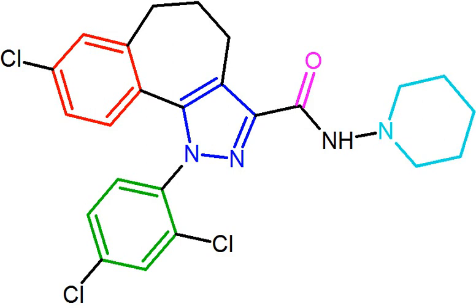The discovery of the endocannabinoid system led to the development of CB1 receptor antagonists. The first CBR antagonist, Rimonabant, was described in 1994. Rimonabant blocks the CB1 receptor selectively and has been shown to decrease food intake and regulate body weight gain. The prevalence of obesity worldwide is increasing dramatically and has a great impact on public health. The lack of efficient and well-tolerated drugs to cure obesity has led to an increased interest in research and development of CBR antagonists.